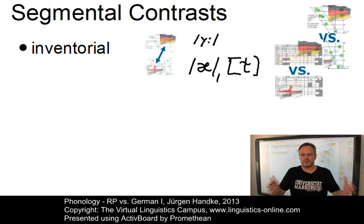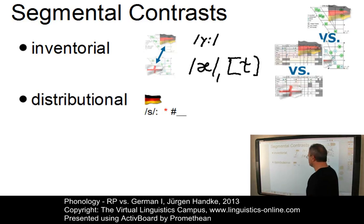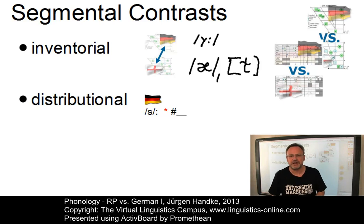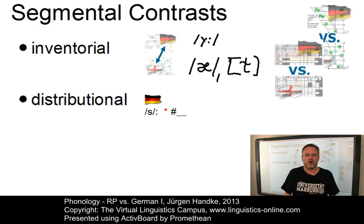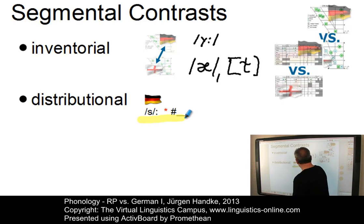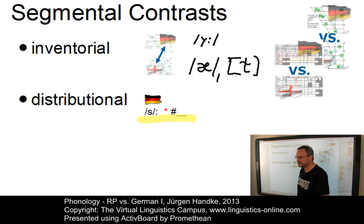A second group of contrasts can be defined as distributional contrasts. Languages may share the same phoneme; however, their allophones are distributed differently. For example, the allophones of the alveolar fricative in RP and German — as pointed out here, in German we do not have an allophone in word-initial position.